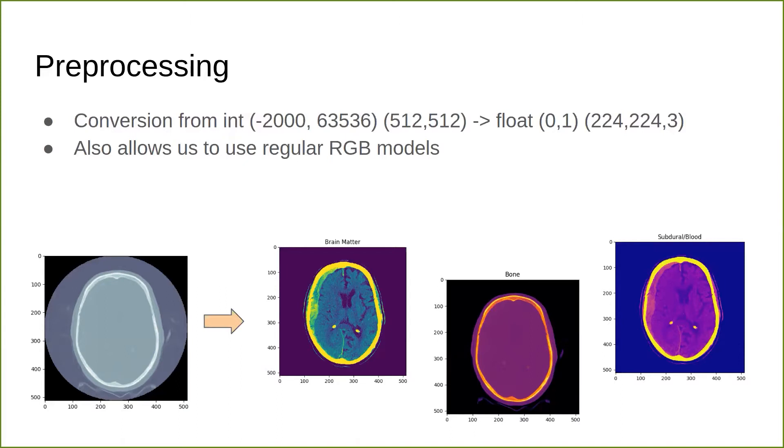Using standard width and level for bone, blood, and brain tissue, we were able to create three different layers with clearer images. We then input these images as RGB within the RGB channels, and then let that run through our model, as talked about in the next slides.